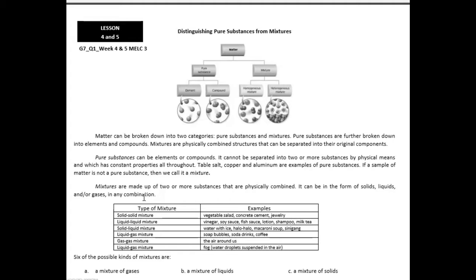When we say homogeneous mixtures, substances are distributed evenly throughout the mixture. All regions are identical in their composition and properties. Example is coffee. When you mix the coffee powder in hot water, the coffee powder dissolves. That is an example of homogeneous mixture. All regions are identical in their composition and properties.